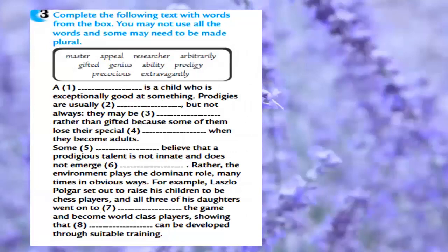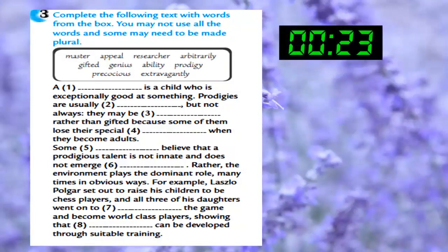Exercise 3. Complete the following text with words from the box. You may not use all the words and some may need to be made plural. We're going to complete these sentences from this list: master, appeal, researcher, arbitrary, gifted, genius, ability, prodigy, precocious, extravagantly. Let's check the answers for this exercise.